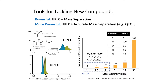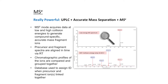This introduces an important subsequent question: while we still have two potential assignments even at a mass accuracy of 1 ppm, how can we go on to distinguish these final two possible assignments? This is where things go from more powerful to really powerful. When we combine UPLC with accurate mass separation, possibly also ion mobility separation, combined with Waters' MSE technology...